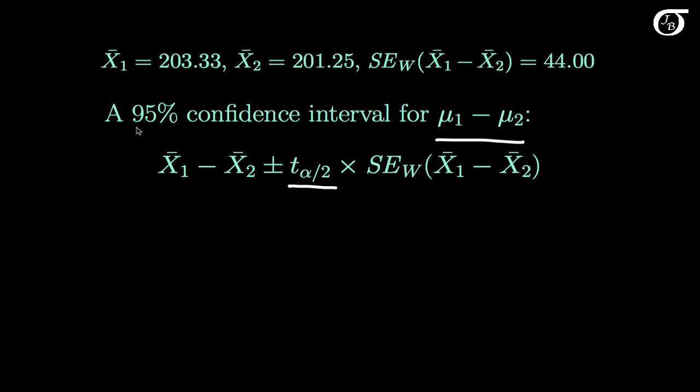And we've looked at this type of thing previously, and for a 95% confidence interval that means the alpha level is 0.05, and the t-value that we need is t sub 0.025. And we're going to find that from software or a t-table, but we need the appropriate degrees of freedom.